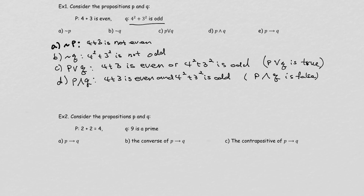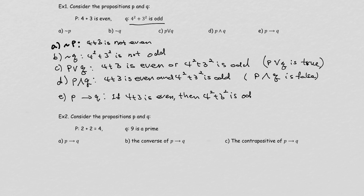Let's look at the last one from example 1: P then Q. If we change this into words: 'If 4 plus 3 is even, then 4 squared plus 3 squared is odd.' Because the first statement is false, this conditional has to be true. If P is false, then no matter what, P then Q will be true.